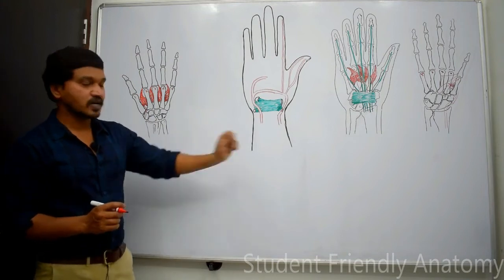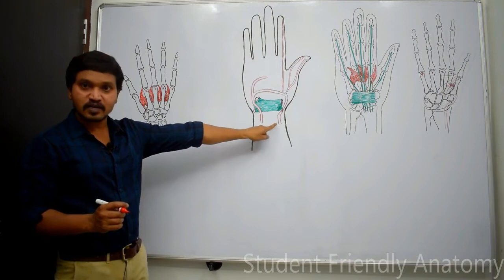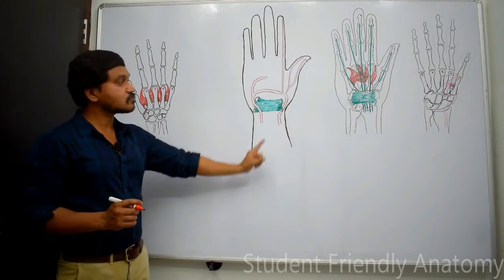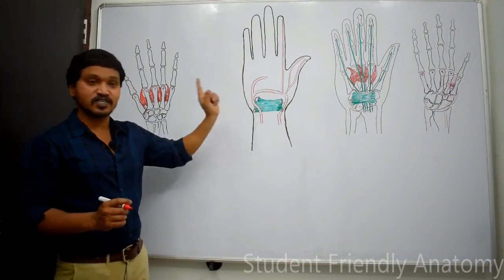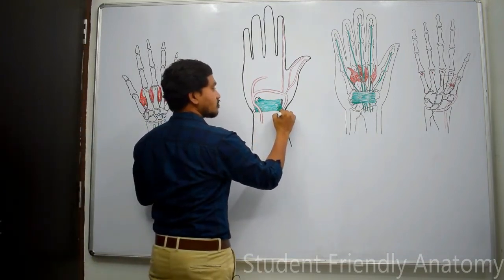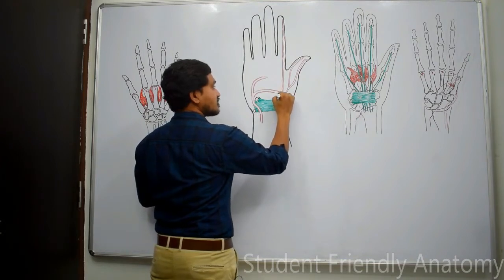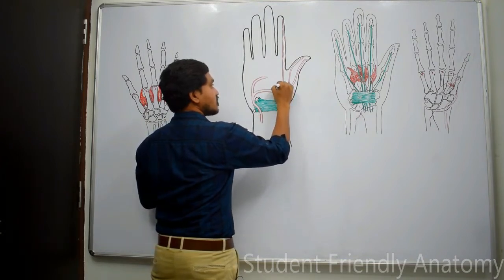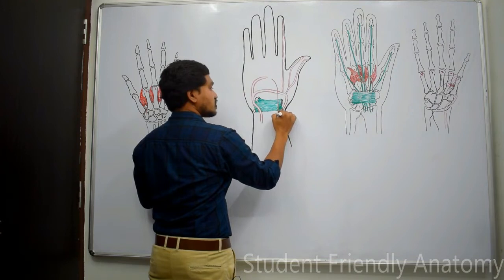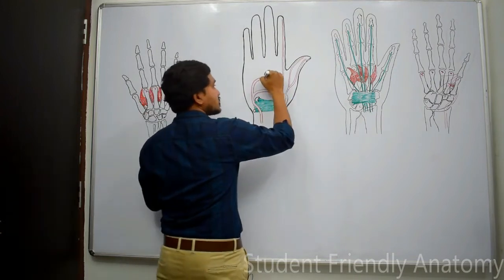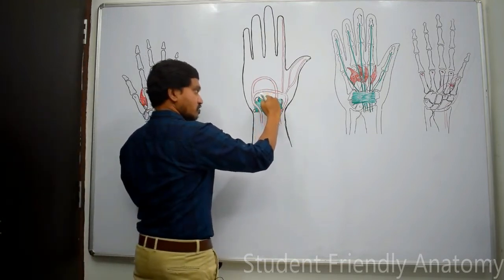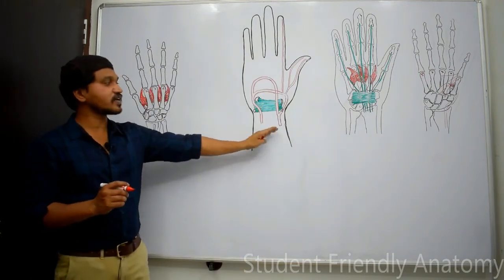The superficial branch of the radial artery passes superficial to the flexor retinaculum and mostly anastomoses with the main continuation of the ulnar artery.